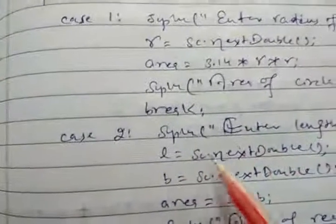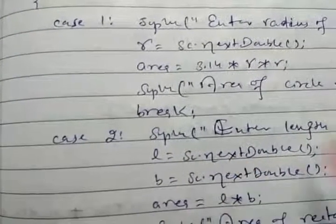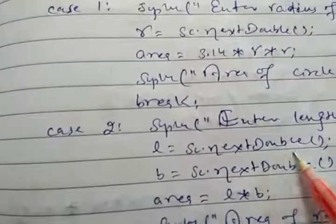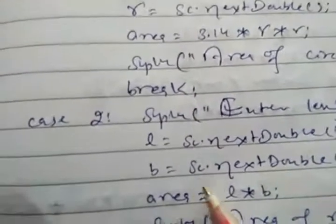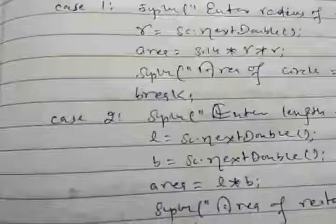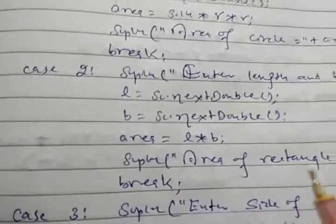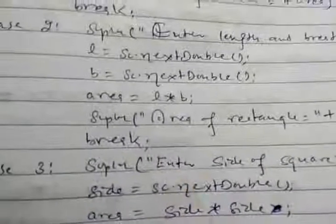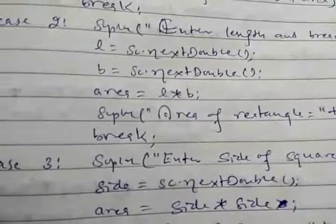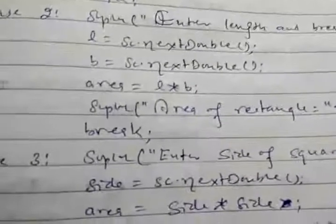Case 2 is for rectangle: enter the length and breadth. length = sc.nextDouble() and width = sc.nextDouble(). The formula is area = l * w. We print the area of rectangle equal to area, followed by a break statement. If we do not use break, all the cases will be executed — this is called fall-through.